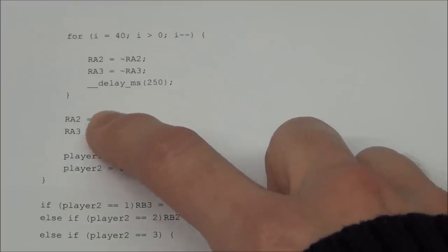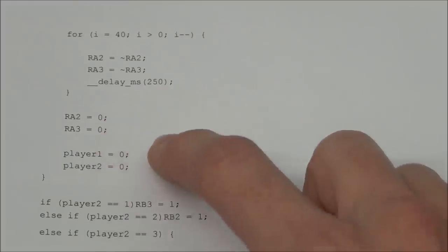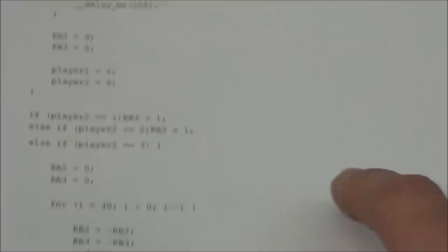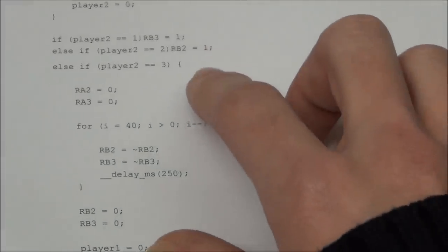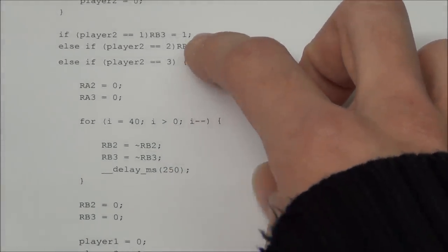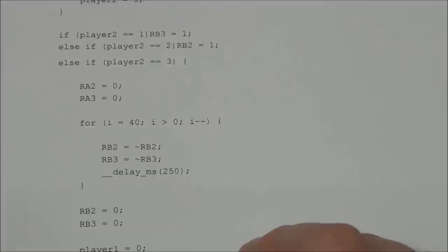And after that we will turn the LEDs off. We will set both players points to 0. And here it will do all the same, just for player 2 instead.